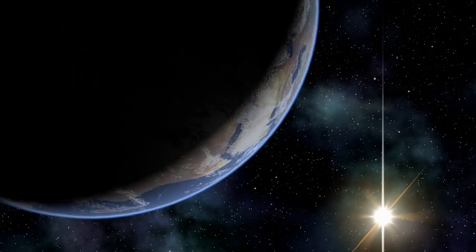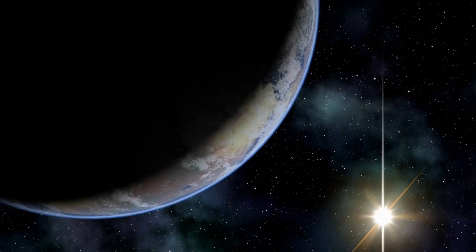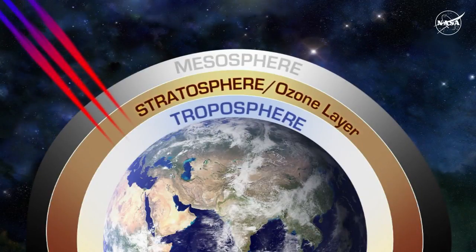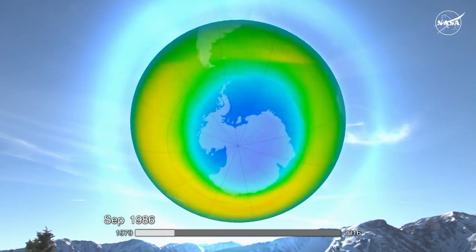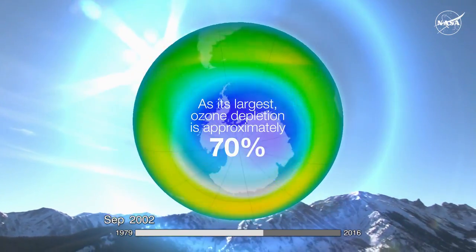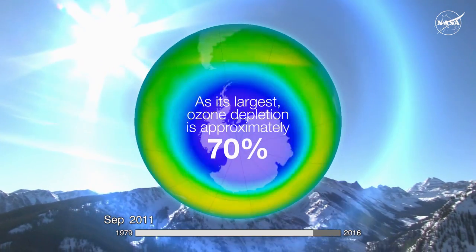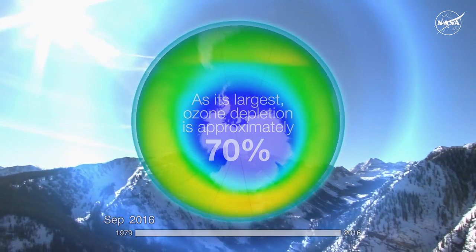The ozone layer in the upper atmosphere protects life on Earth from strong ultraviolet radiation from the Sun. The strong depletion of the ozone layer that was detected in 1985 was the first significant global environmental concern.